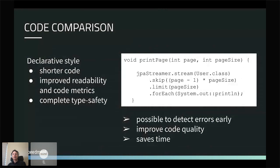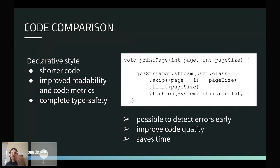JPA Streamer uses a declarative style like streams — shorter code, improved readability, and improved code metrics. The cyclomatic complexity of this method when running static code analysis is much less than the other examples. It's also completely type-safe. You have partial type safety with criteria builders, but this is entirely type-safe. It's possible to detect errors during development, which improves code quality and ultimately saves time, especially for code maintenance.